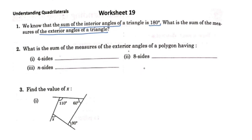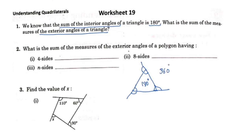We have a triangle. This angle is the interior angle. The exterior angle is this angle here. The interior angle and the exterior angle together form a linear pair of 180 degrees.